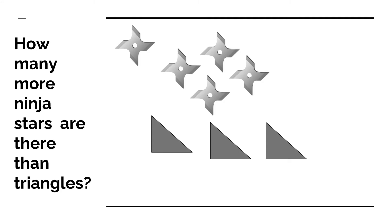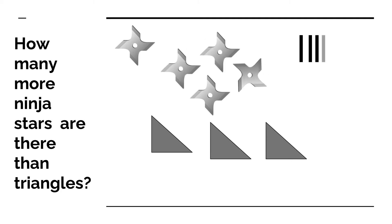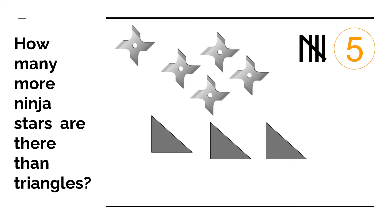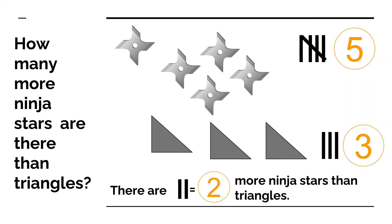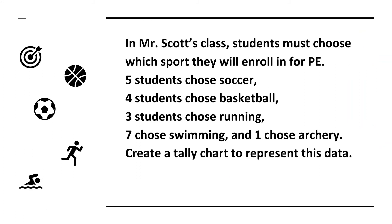Let us try another one and find out how many more ninja stars there are than triangles. One, two, three, four, five — there are five ninja stars. One, two, three — there are three triangles. So there are two more ninja stars than triangles.